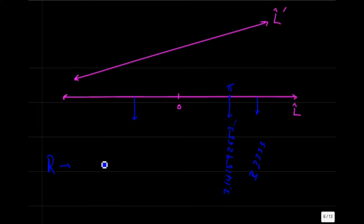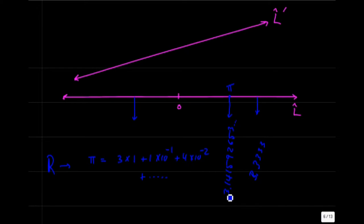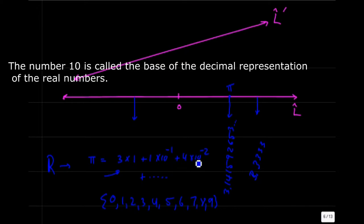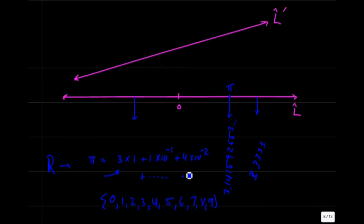Notice this decimal expansion of pi. This can be written as a series. In particular, pi is equal to 3 times 1, plus 1 times 10 to the minus 1, plus 4 times 10 to the minus 2, and so on. All of the digits have to be one of the 10 digits of decimal numbers. So every real number is a string of digits multiplied by powers of 10.